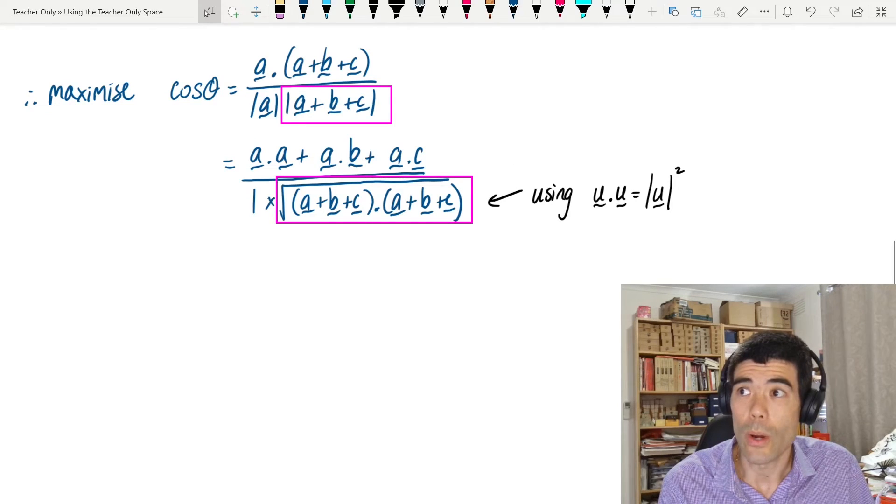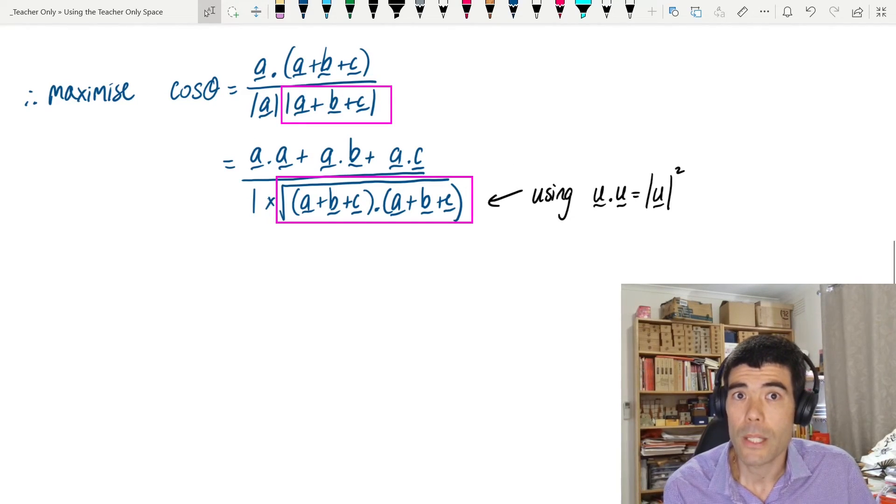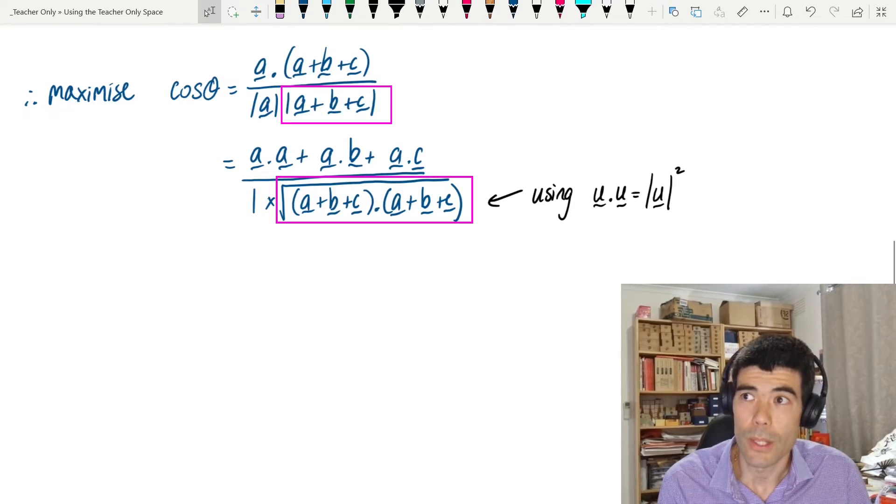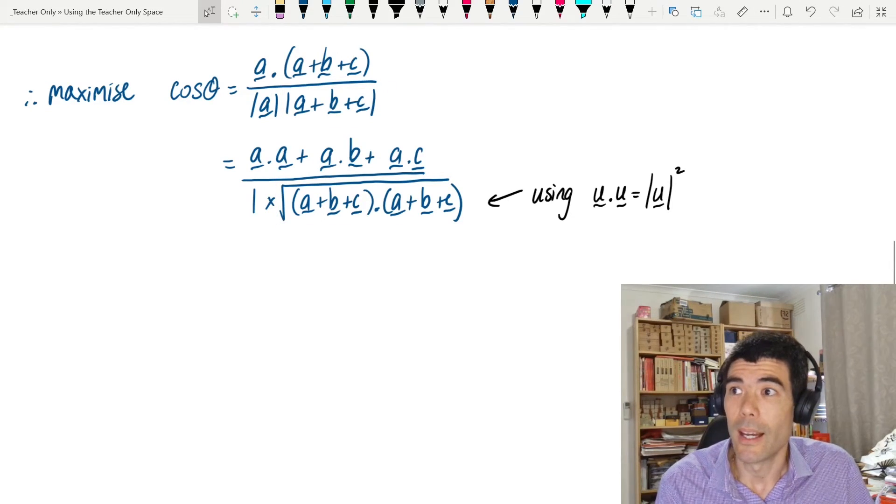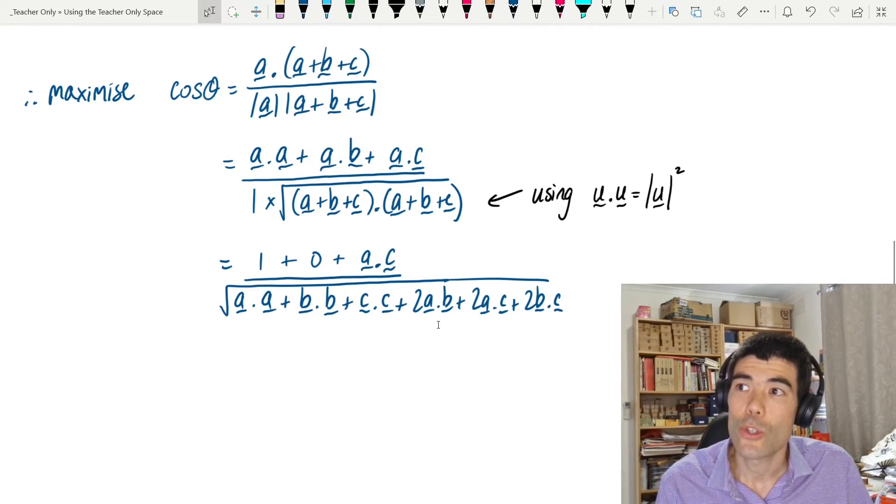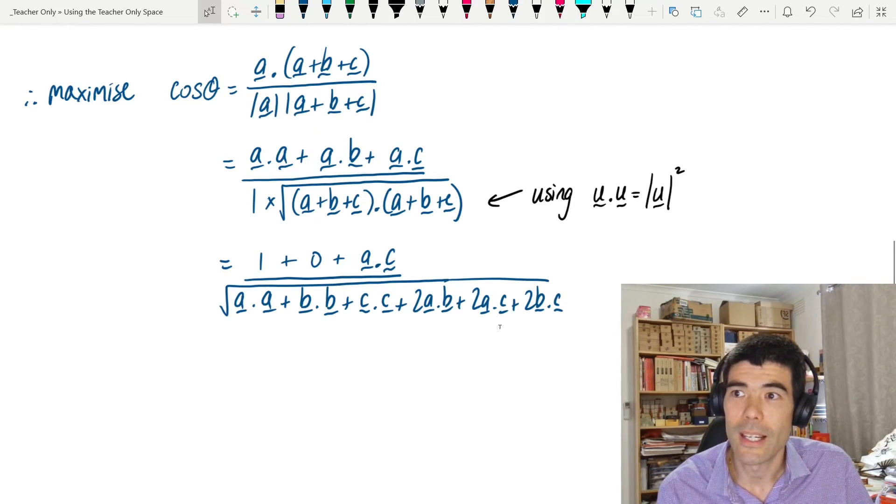So this then is going to be the square root of a plus b plus c dot with itself. Expanding those brackets, we get a dot a, b dot b, c dot c, 2 times a dot b, etc.